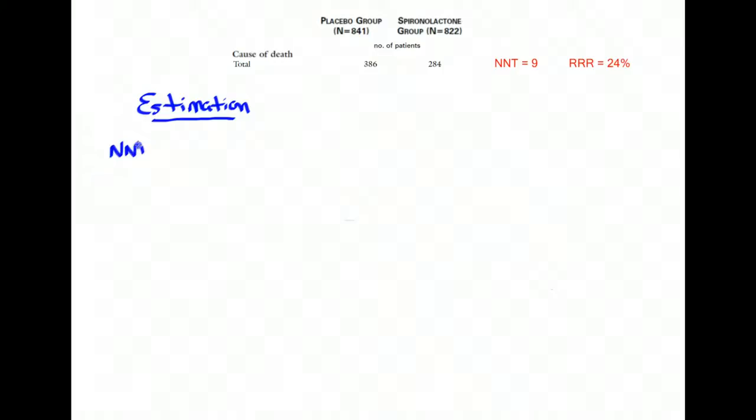So to calculate the number needed to treat that's specific to your individual patient, we're going to use the number needed to treat from the study, and I've already taken the liberty to calculate this for the RALS trial. If you can't remember how to calculate a number needed to treat, you can review a previous video I've made on this topic. So you take the number needed to treat from the study and divide it by this F, or fudge factor or fraction.